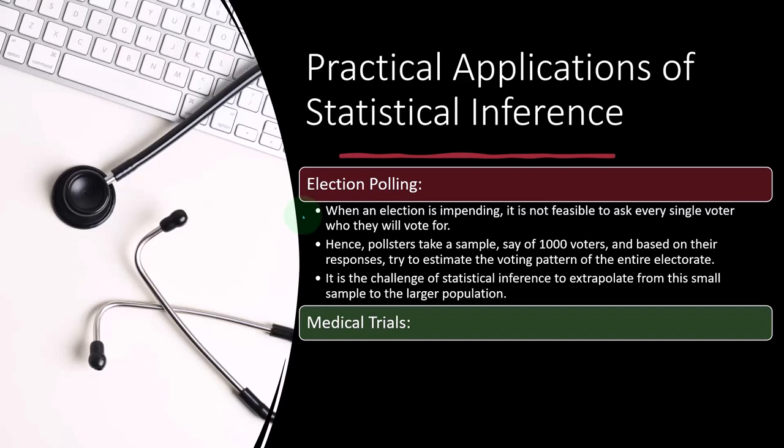Medical trials are another common example. Anytime we're doing scientific testing, a hypothesis testing approach — which is the foundational thing you do in science — is going to be a statistical test. In medicine, for example, when testing a new drug, it is not possible to test the medication on the entire population. If we're trying to ask whether a drug is effective, we can't test the entire population, even those who are sick — so we take a smaller group and test on that smaller group.